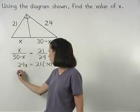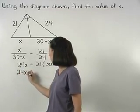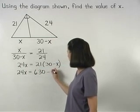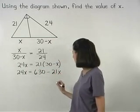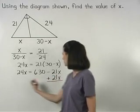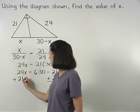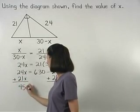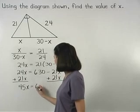and we have 24x equals 630 minus 21x. Adding 21x to both sides gives us 45x equals 630.